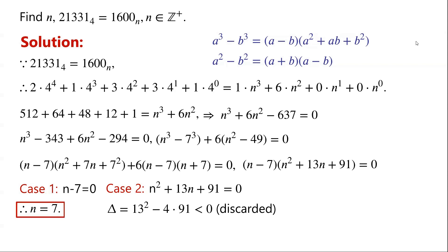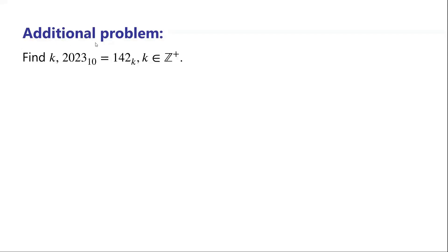Now we have an additional problem. Find k: 2, 0, 2, 3 in base 10 equals 1, 4, 2 in base k, where k is a positive integer.